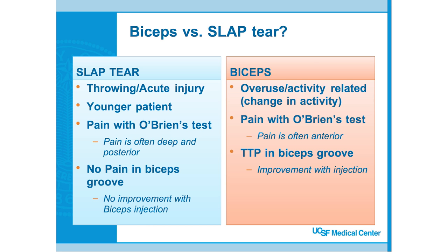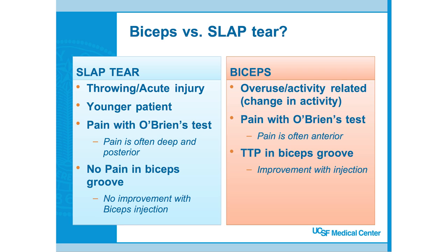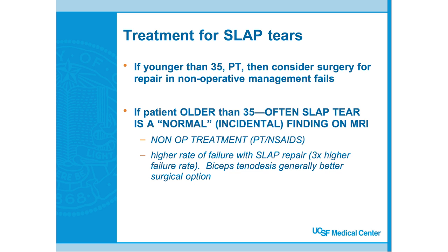Operative treatment of superior labral tears is generally indicated for younger patients — typically under 30 — with an acute throwing injury, pain with O'Brien's test, and no tenderness in the biceps groove. Biceps tendonitis is due to overuse and also has pain with O'Brien's test, but the pain localizes more to the biceps groove — you can feel that cord-like structure running north-south in the front of the shoulder. SLAP lesions in younger patients — often from a fall on an outstretched hand — may get surgical repair if conservative management fails.